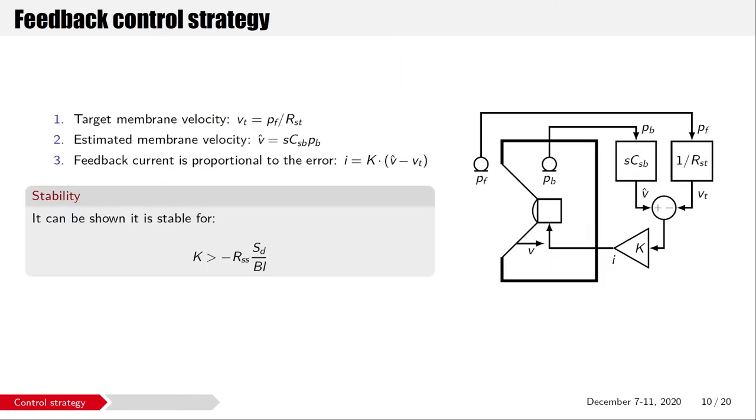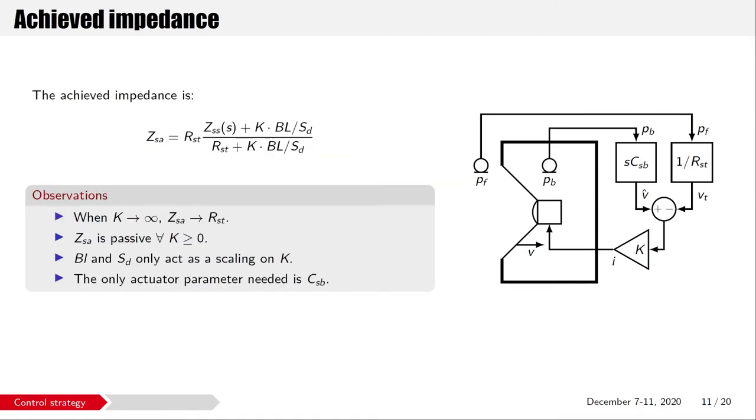The feedback control is built in the following way. The target membrane velocity is the front pressure divided by the target resistance R_st. The actual membrane velocity is found by differentiating the pressure in the cavity, as explained on the previous slide. Finally, a feedback current, proportional to the velocity error, is fed into the coil of the speaker. It can be analytically shown that the system is stable for K greater than some negative value. In practice, only positive values of K will be taken into account.